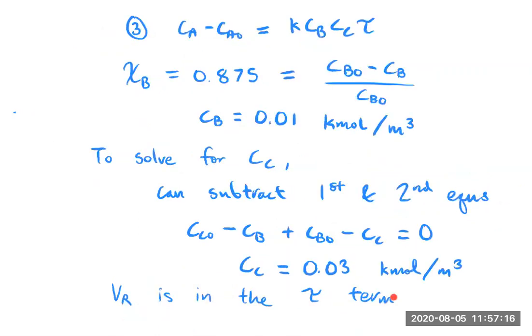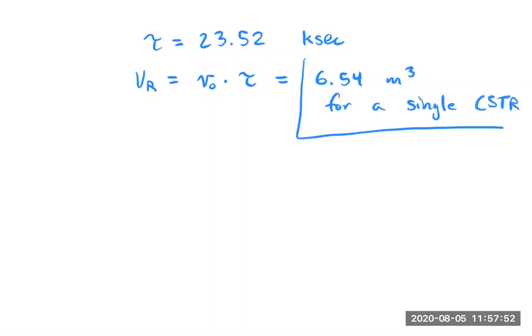And so if we do that, now I'm going to go to a new page here. We get tau equals 23.52 kiloseconds. And now if we wanted to calculate the reactor volume, we have the reactor volume equals the volumetric flow rate coming in times tau. And that gives us 6.54 meters cubed for single CSTR. We'll try to hang on to that value. We'll come back to this page, maybe just to refer to it, but that's the volume for single CSTR.